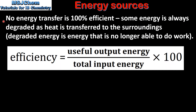No energy transfer is 100% efficient. Some energy is always degraded as heat is transferred to the surroundings. Degraded energy is energy that is no longer able to do work. Efficiency is calculated by dividing the useful output energy by the total input energy and multiplying by 100, which gives a percentage efficiency.